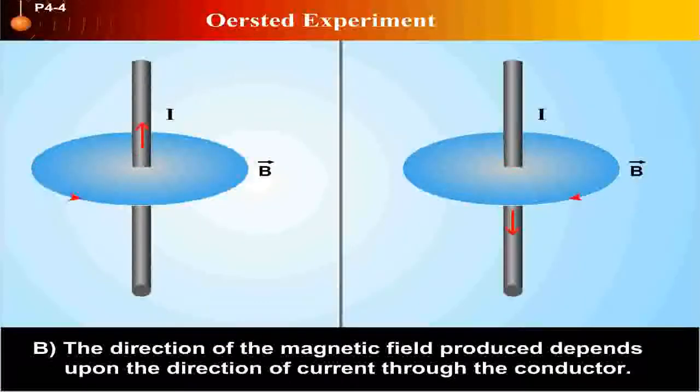B. The direction of the magnetic field produced depends upon the direction of current through the conductor.